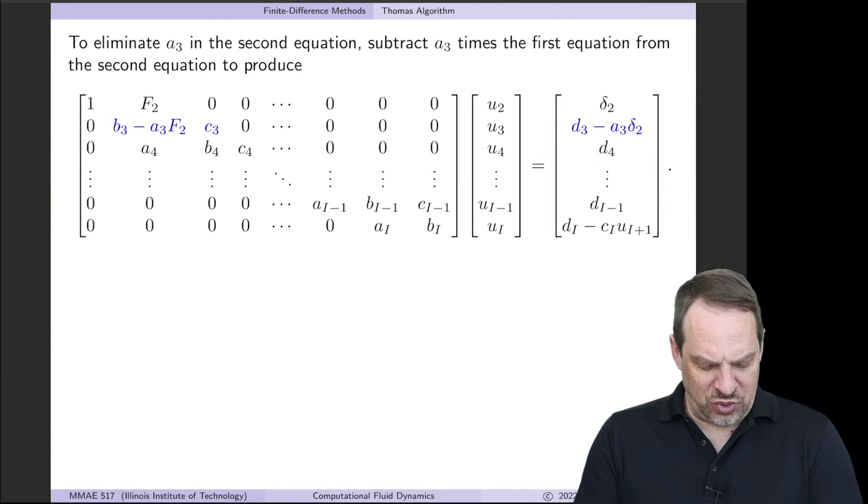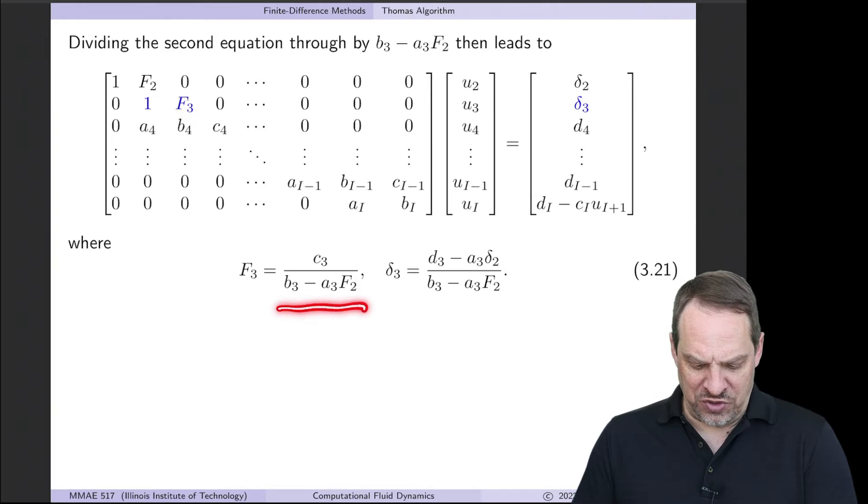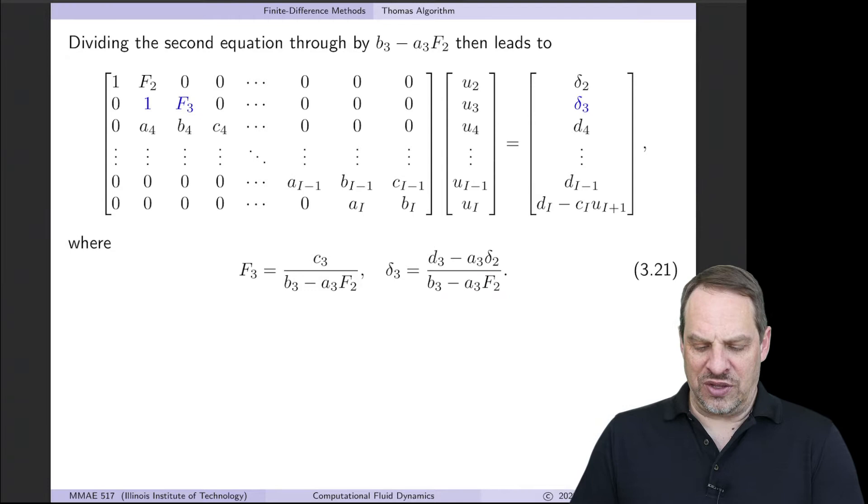The next step will be to make this a 1. So we divide through the second row by this quantity. That gives us a 1 and F3, which is C3 over the B3 minus A3 F2. And then the delta 3, which is what we had before, which was the D3 minus A3 delta 2, divided by this B3 minus A3 F2.